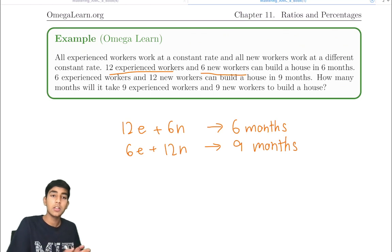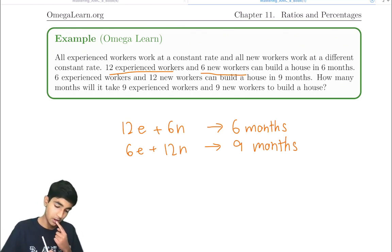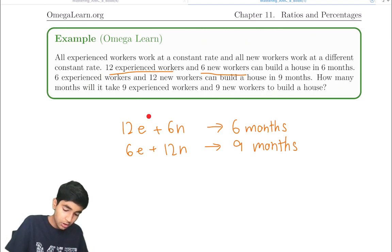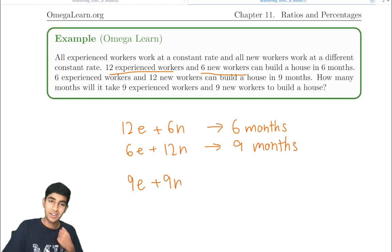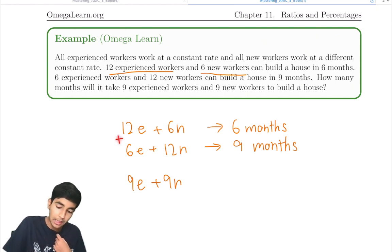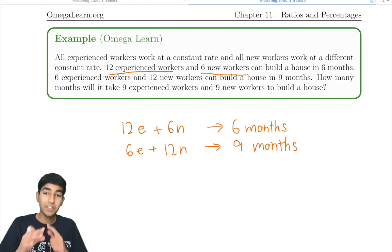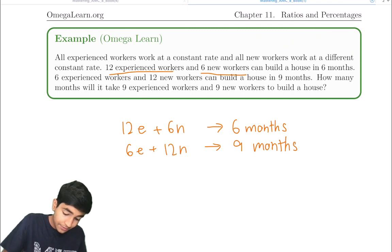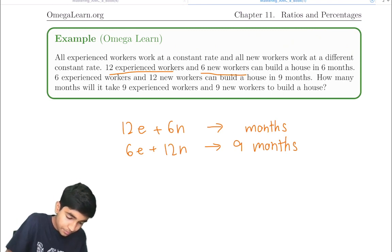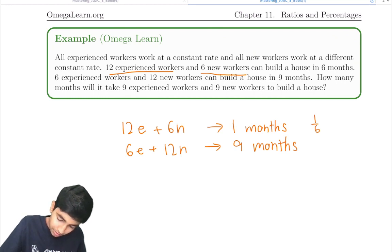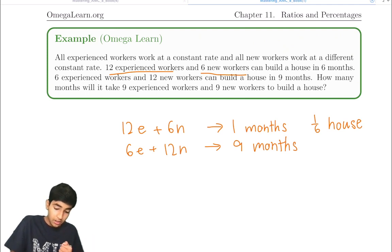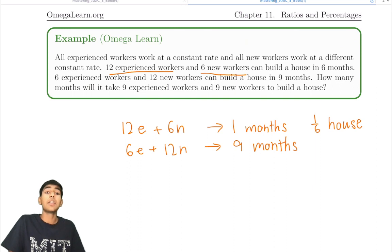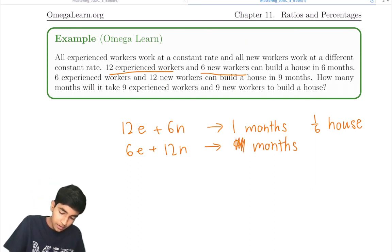How many months will it take 9 experienced and 9 new workers? A very common mistake is to think it's just the average of 6 and 9 — that's not true, because you can't just average time like that. The trick here is to isolate on one unit of time — in this case, one month. If they can build a house in 6 months, in one month they can build one-sixth of a house. Similarly, 6 experienced and 12 new workers can build one-ninth of a house in one month.